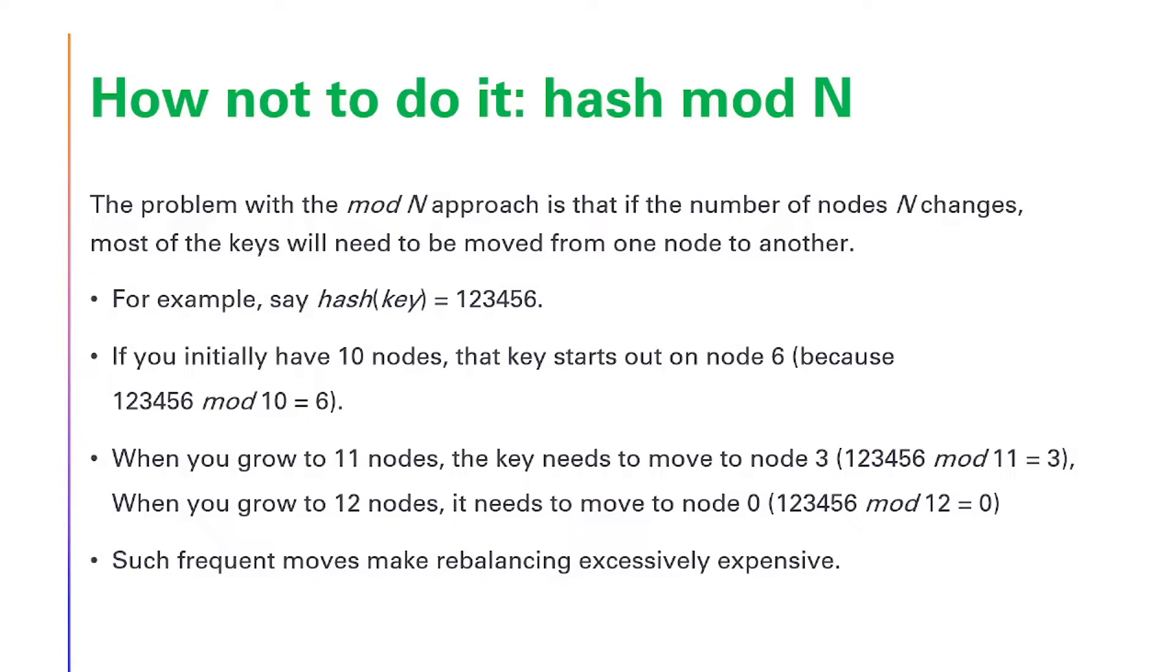If you have initially 10 nodes, the key starts out on node 6. When you grow to 11 nodes, the key needs to move to node 3. When you grow to 12 nodes, it needs to move to node 0. Such frequent moves make rebalancing excessively expensive.